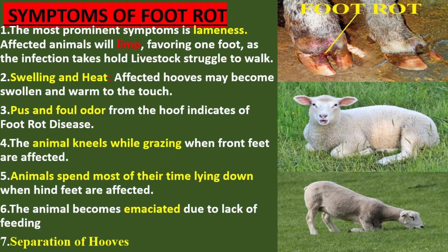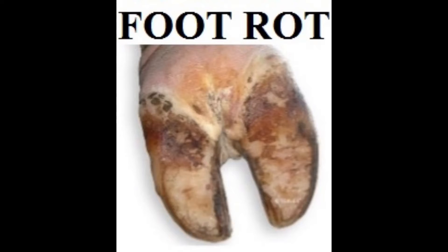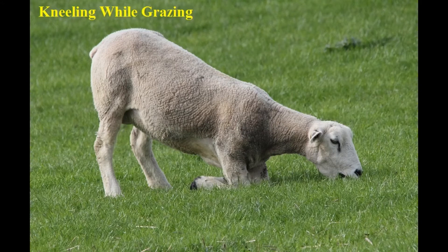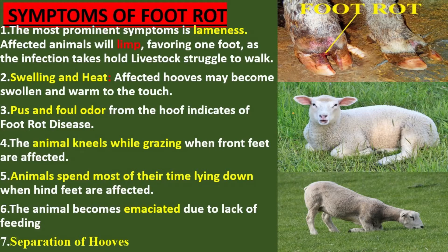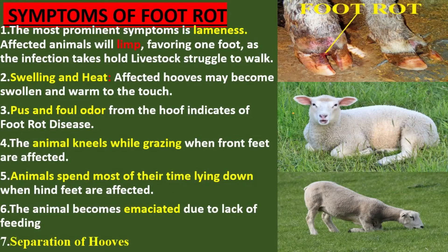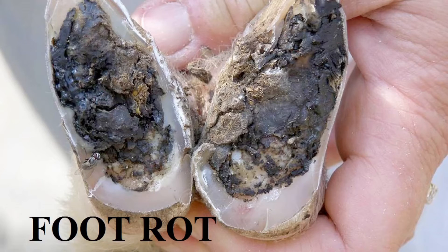Pus and foul odor from the hoof indicates foot rot disease. The animal kneels while grazing when front feet are affected. Animals spend most of their time lying down when hind feet are affected. The animal becomes emaciated due to lack of proper feeding. In severe cases, the hoof capsule may begin to separate from the underlying tissue, leading to the characteristic foul-smelling discharge and lameness.